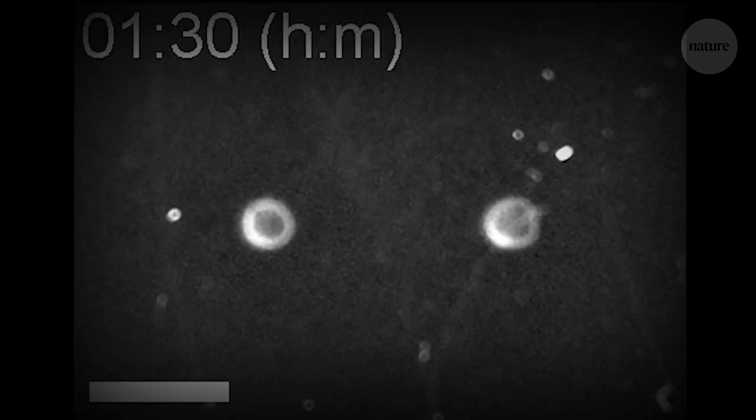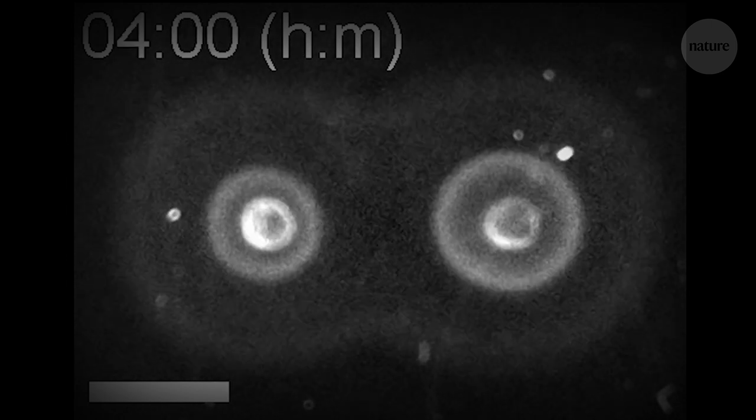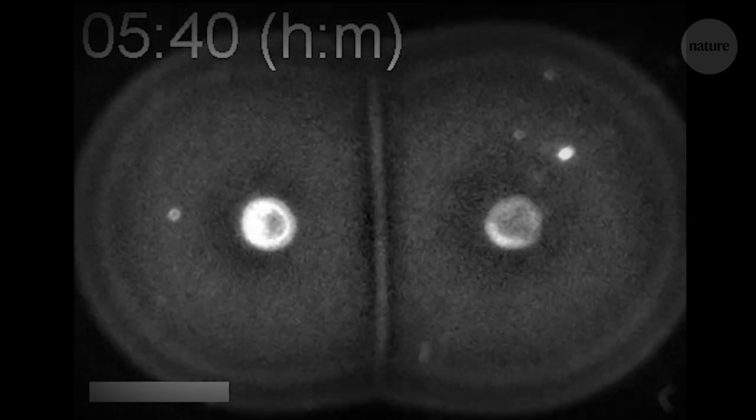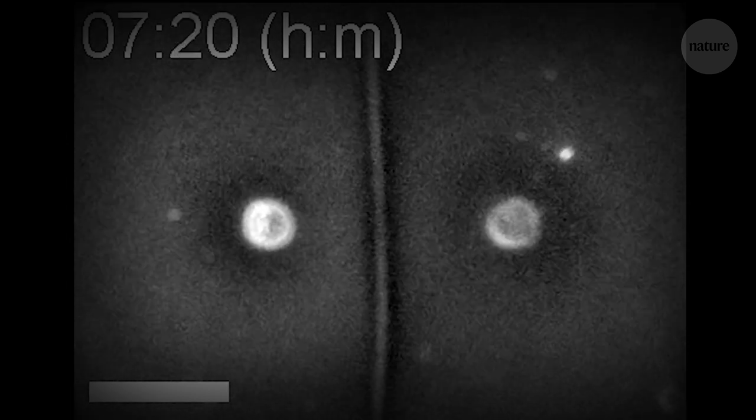But when the bacteria with adhesins swarm together, the two colonies form an edge where the keys and locks meet, and that opens up some opportunities to get creative.